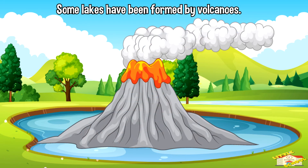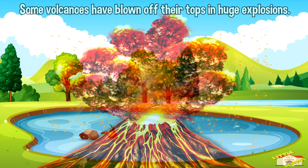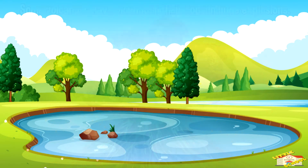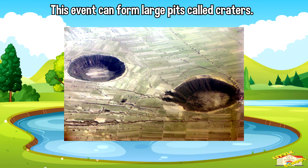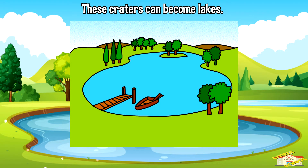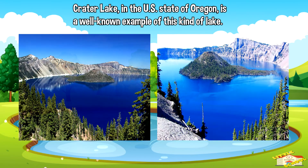Some lakes have been formed by volcanoes. Some volcanoes have blown off their tops in huge explosions. This event can form large pits called craters. Crater Lake in the U.S. state of Oregon is a well-known example of this kind of lake.